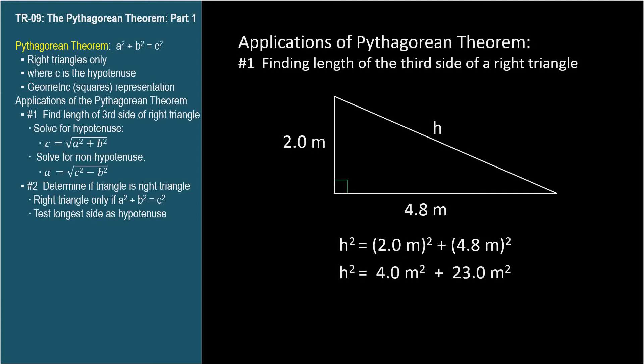So square the short sides and add them together, and take the square root. h equals 5.2 meters. Remember to include the units.